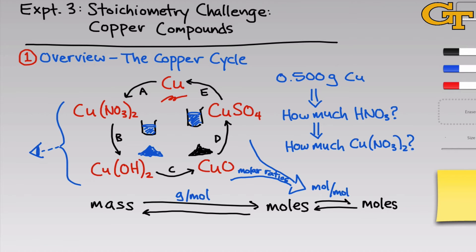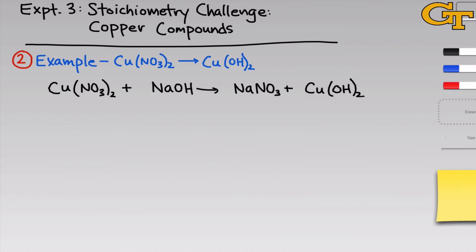Let's take a closer look at step B, which involves the conversion of copper nitrate to copper hydroxide, and look at how some of these stoichiometry calculations play out in practice. In part B, we'll react the copper nitrate solution with sodium hydroxide to form a copper hydroxide precipitate and aqueous sodium nitrate. An unbalanced equation is shown here in black, and let's balance this equation quickly — we'll need it to extract the molar ratios that allow us to convert from moles of one substance to moles of another.